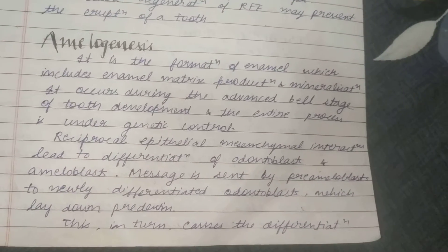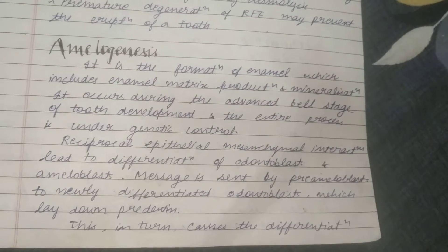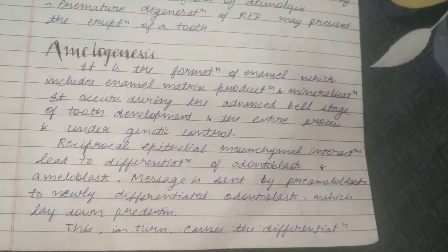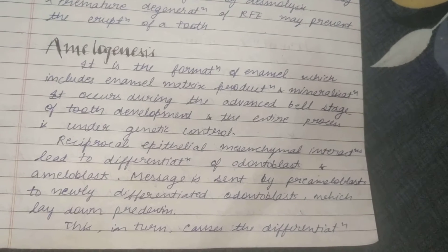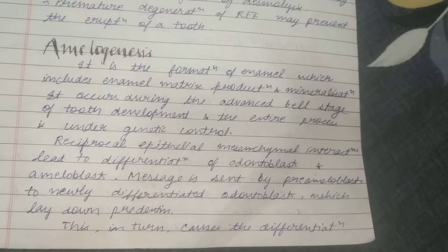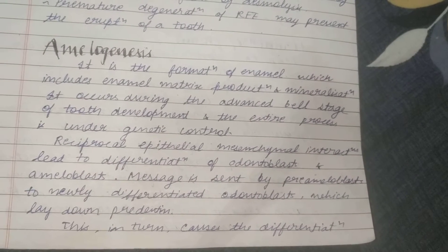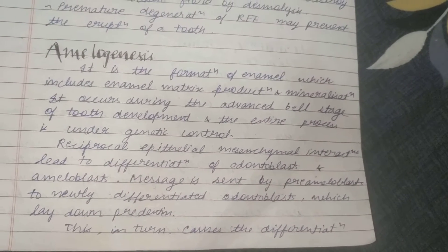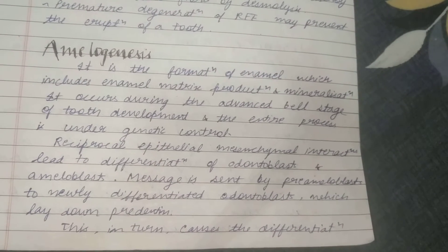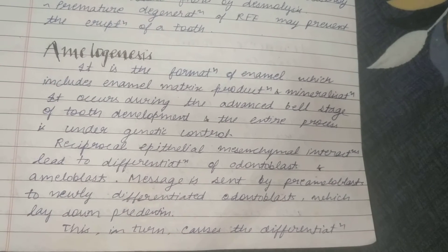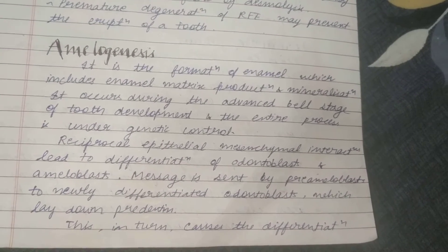What is amelogenesis? It is the formation of enamel, which includes enamel matrix production and mineralization. It occurs during the advanced bell stage of tooth development, and the entire process is under genetic control.